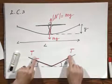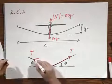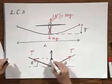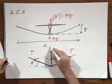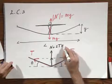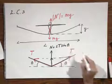The horizontal components cancel. The vertical component is this force plus this force. And the net force vertical N equals 2T times the sine of theta.